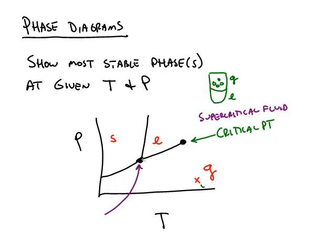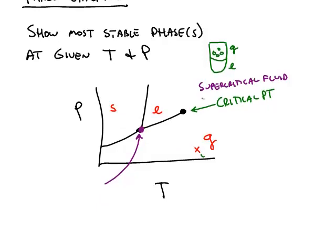This point, if you were at this point, you would be touching solid, liquid, and gas. So that means all three phases are equally likely. They're all stable. This is called the triple point.